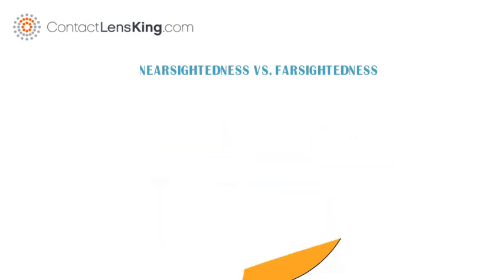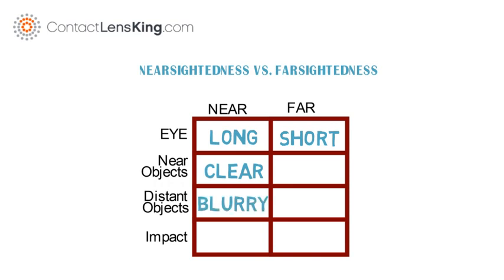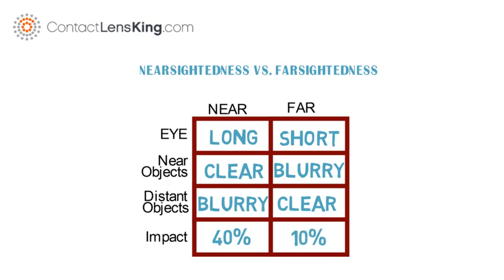So what are the differences between the two? People suffering from nearsightedness usually have longer eyes than normal, where people with farsightedness have shorter eyes than normal. Nearsightedness means people can see near objects clearly and distant objects blurry, where farsightedness means people can see distant objects clearly and near objects blurry. Approximately 40% of the population is impacted by nearsightedness, where only 10% is impacted by farsightedness.